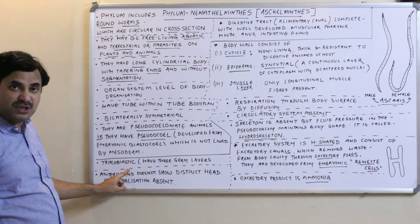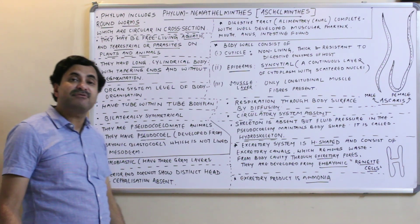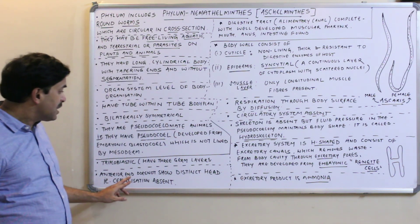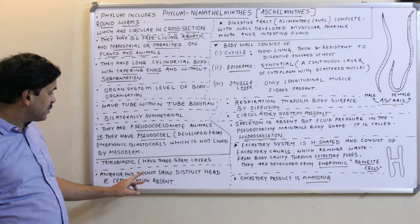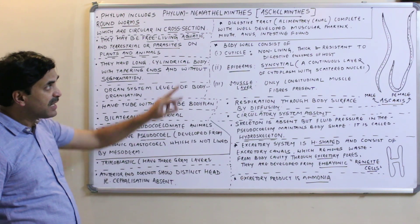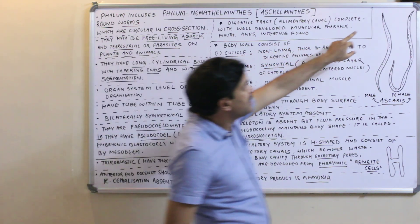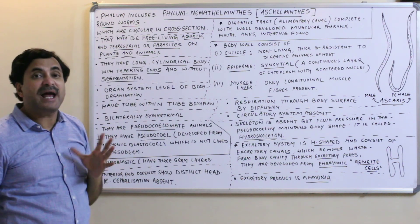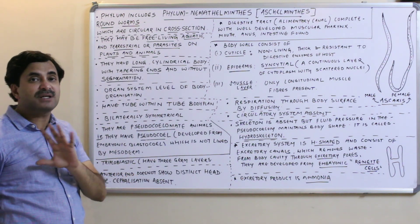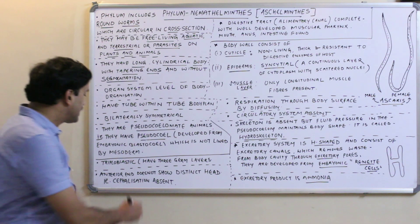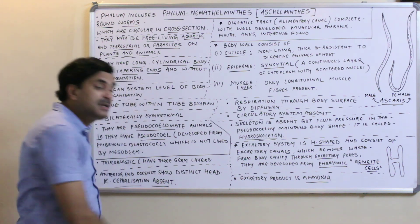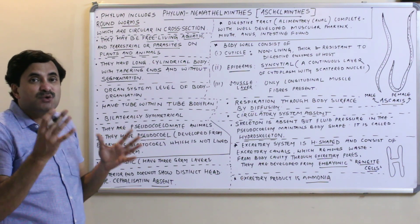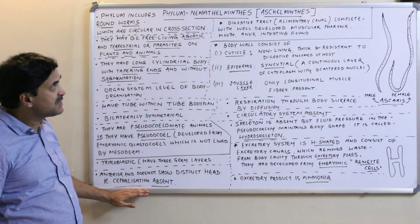They are triploblastic, meaning they have three germ layers: ectoderm, mesoderm, and endoderm. At the anterior end of the body they do not have a distinct head — cephalization is absent.